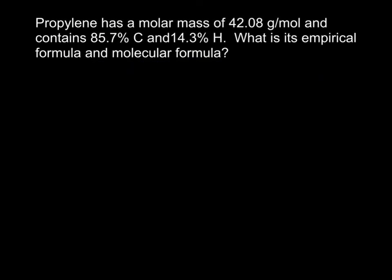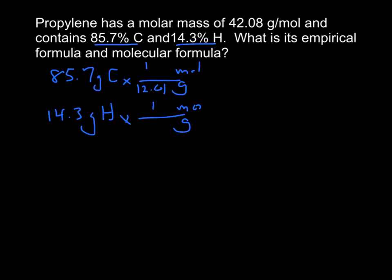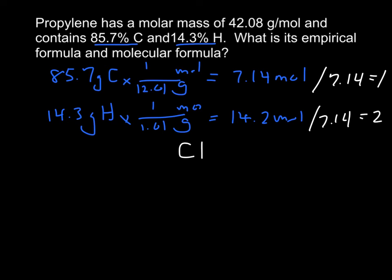So starting from scratch, I've got percentages. So I start by saying I have 85.7 grams of carbon and 14.3 grams of hydrogen. I want to find its empirical formula, so I say grams to moles, grams to moles. 1 over 12.01 for carbon, 1.01 for hydrogen, so I get 7.14 moles of carbon and I get 14.2 moles of hydrogen. Remember, next step, divide by the smallest number, so my empirical formula is CH2.